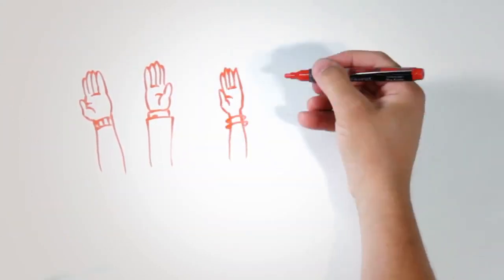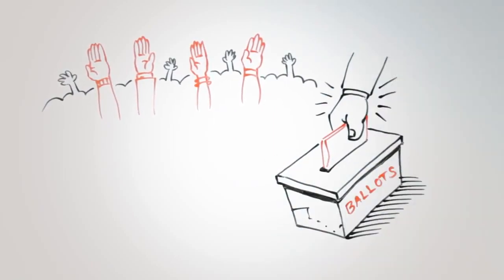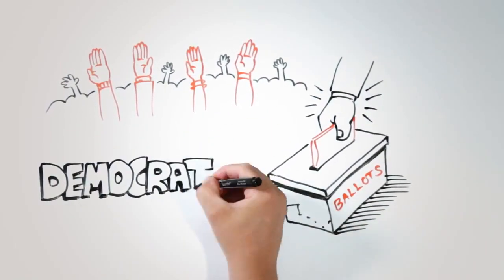Members vote for the directors to lead their co-op. They vote yay or nay on big issues. Majority rules. That's the principle of democratic member control.